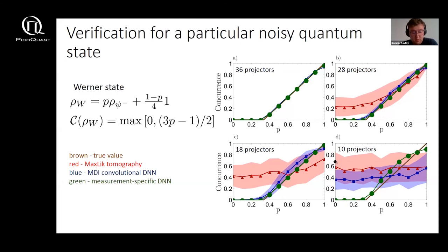Ranging from full tomography, so 36 projectors, down to 10. Compared to maximum likelihood approach the deep neural networks predict entanglement well even from half the necessary projectors as you can see in figure C containing only like 18 projectors.